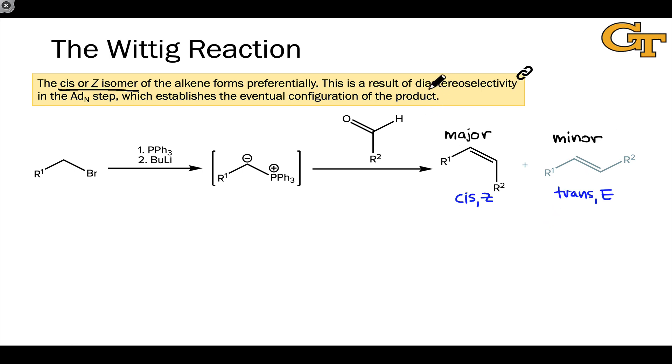This is a case of stereoselectivity, more specifically diastereoselectivity, the selective formation of one diastereomer, the cis or Z diastereomer, over another, the trans or E diastereomer.